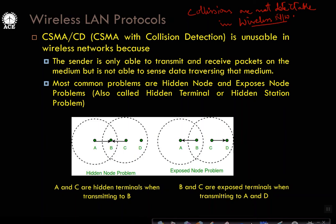Every radio of a wireless host transmitter has a limited fixed range, represented by a circular area. This is the range of host A and this is the range of host C. Within the radio range of host A, whoever is present can see the transmissions of A. Whoever is present within the radio range of station C can see the signals transmitted by C.